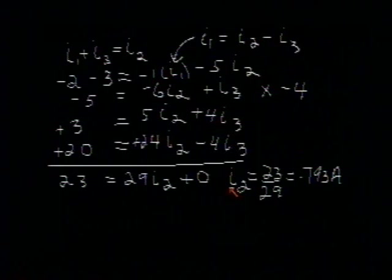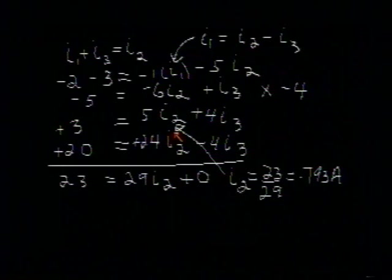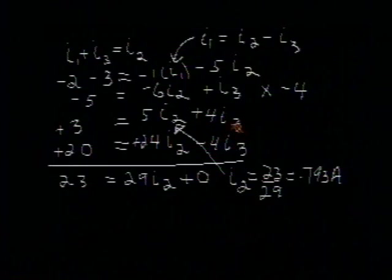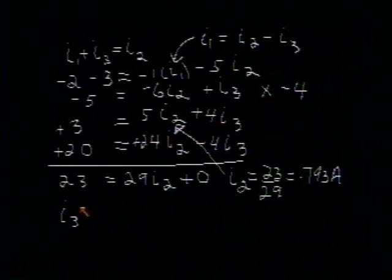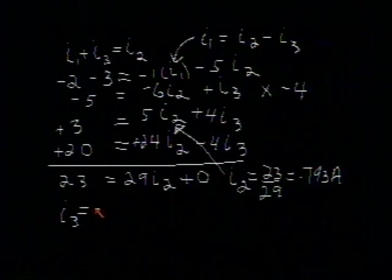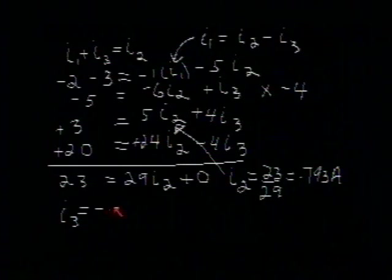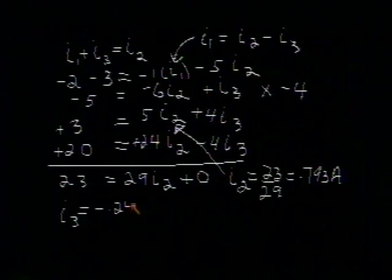Now, if we take this value for I2 and substitute it up into this equation, then solve this equation for I3. And you can do that and confirm that what you get for I3 is minus 0.241 amps.